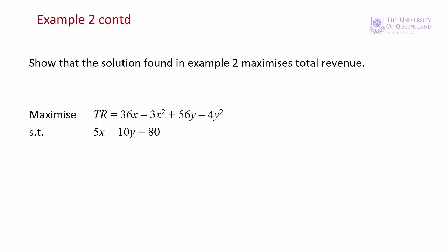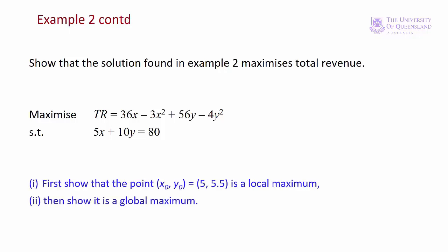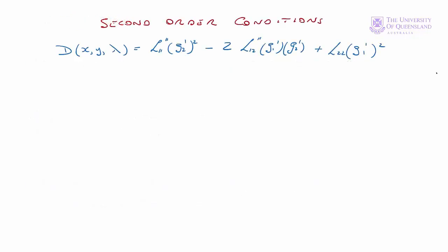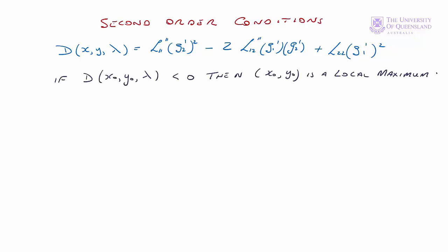In example 2, a firm producing products x and y wanted to maximise its total revenue function subject to a budget constraint. We found the stationary point x naught, y naught. We now want to show that stationary point is first a local maximum and then a global maximum. The second order conditions for a Lagrangian are based on the function d of x, y, and lambda. The test for a local maximum is: evaluate d at the stationary point x naught, y naught — if the value is less than zero, then x naught, y naught is a local maximum. We need to find the second order partials.